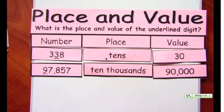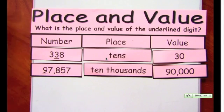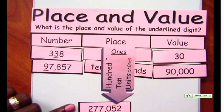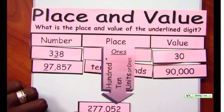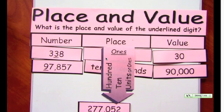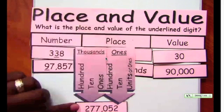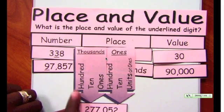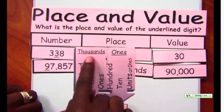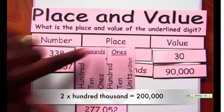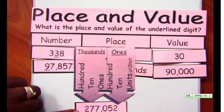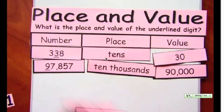Let's try one more. Looking at the digit 2 in this larger number — the group 0, 5, and 2 is in the ones period, and the group with 2, 7, and 7 is in the thousands period. The underlined 2 is in the hundred-thousands place. 2 times 100 gives us 200, but in context it's 200,000. So the value of this 2 is 200,000.